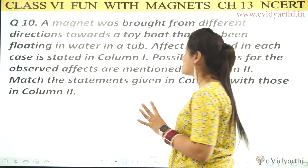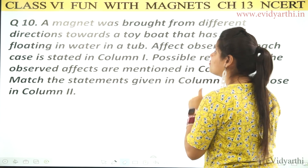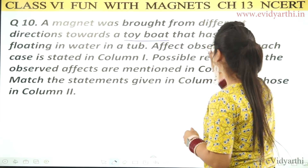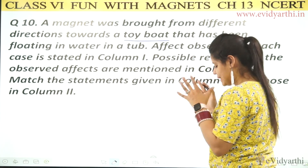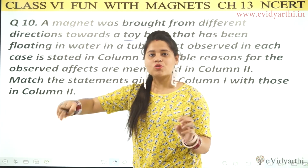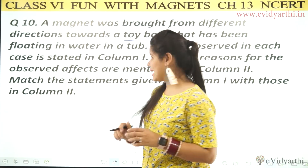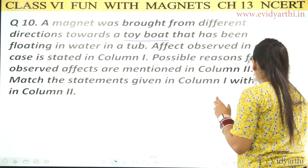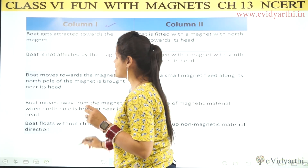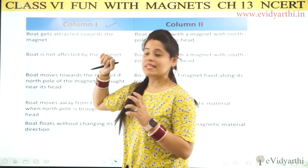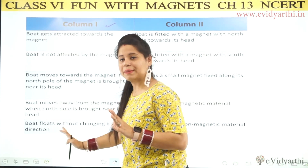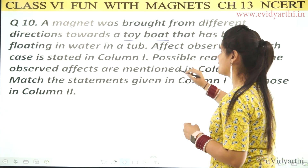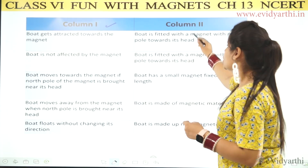Let's get to the last question — question number 10. It is quite a big question. A magnet was brought from different directions towards a toy boat floating in water in a tub. The effects observed in each case are stated in column 1, and the possible reasons for the observed effects are mentioned in column 2.